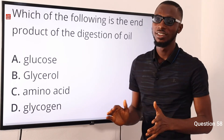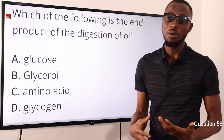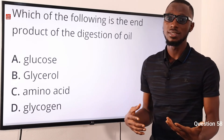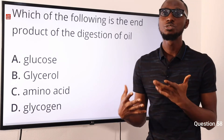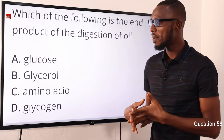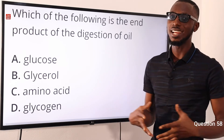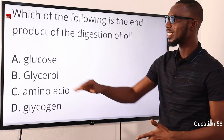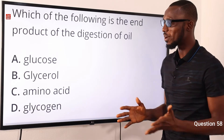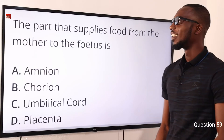Number 58: which of the following is the end product of the digestion of oil? When talking about fat or oil, the enzyme involved is lipase. When it is broken down, what you get is glycerol and fatty acids. So the correct option is glycerol.